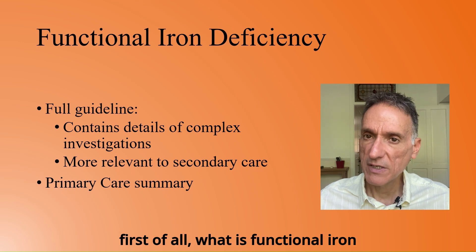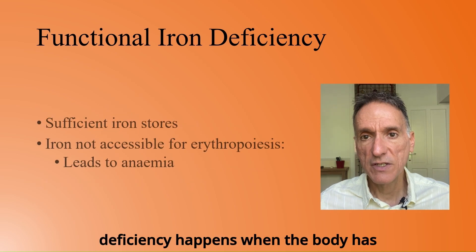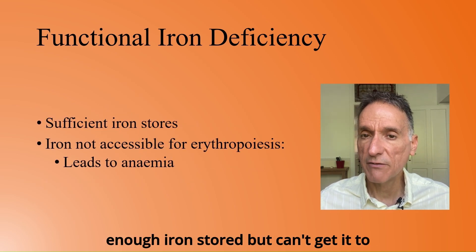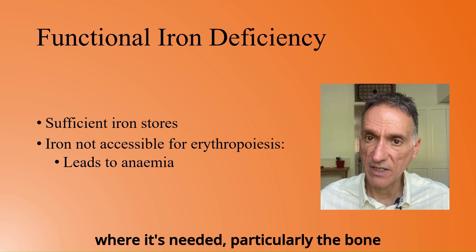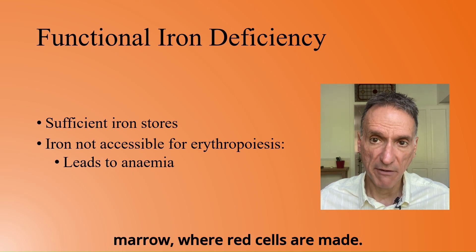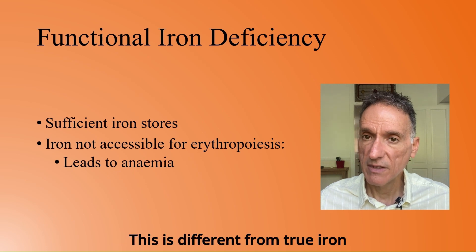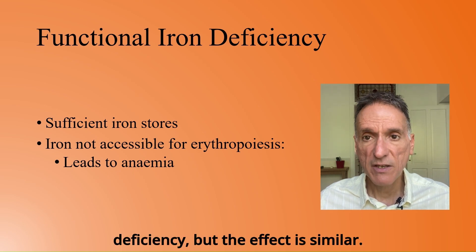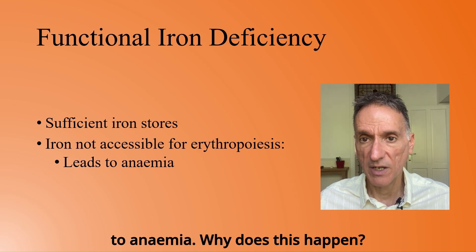But first of all, what is functional iron deficiency? Functional iron deficiency happens when the body has enough iron stored but can't get it to where it's needed, particularly the bone marrow, where red cells are made. This is different from true iron deficiency, but the effect is similar. Not enough hemoglobin is made, leading to anemia.